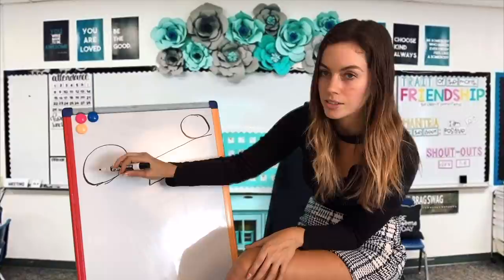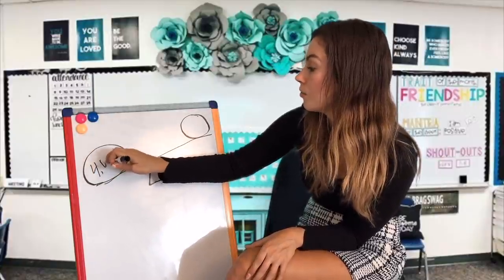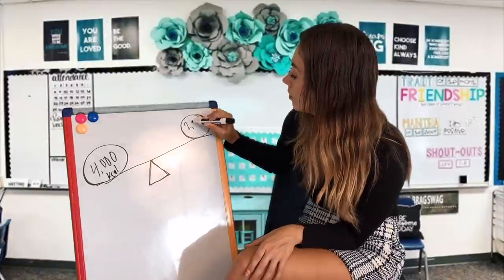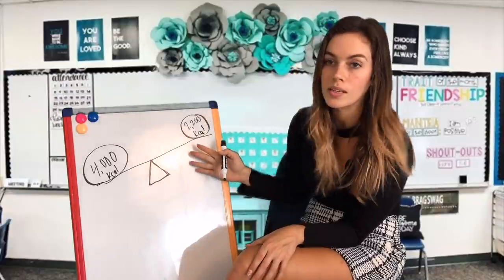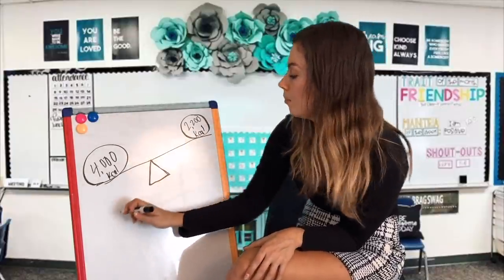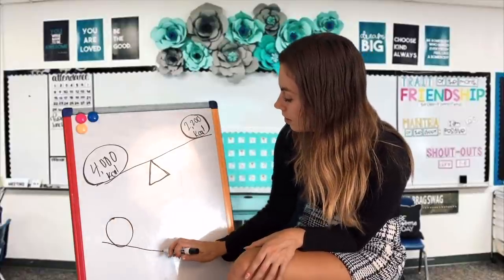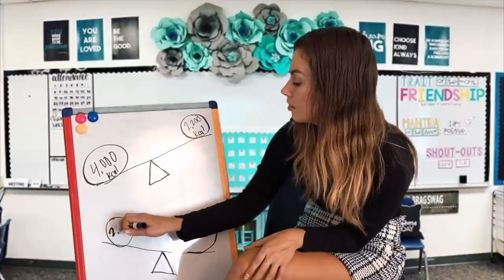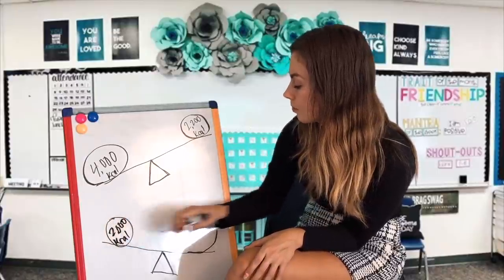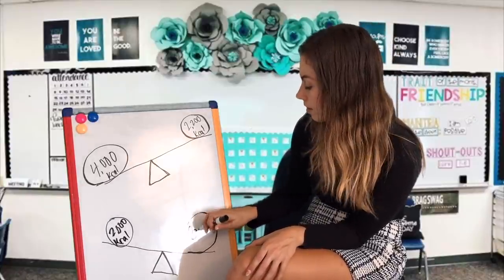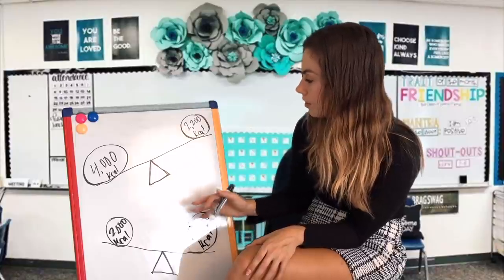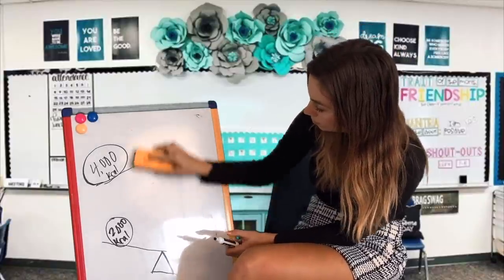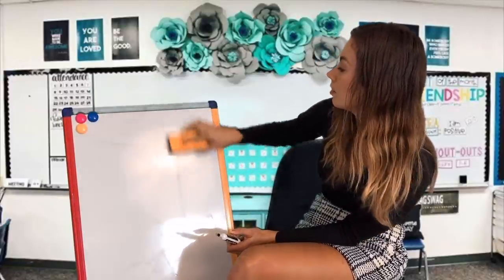If your energy in is 4,000 calories and your energy used is 2,200 kilocalories, this would lead to weight gain because you're taking in too much energy. If your energy in is 2,000 calories and your energy out is 3,000 calories, that would lead to weight loss. So you want to balance the scale, unless you're looking for weight gain or weight loss.